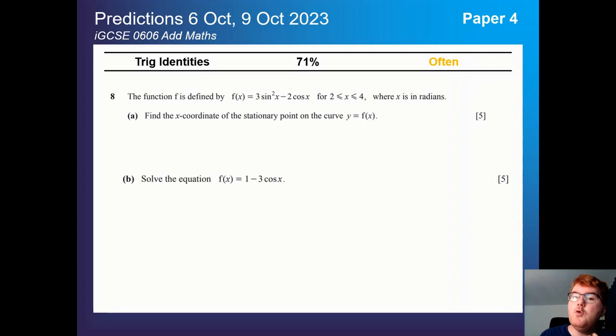Trig identities is also important in paper two, just like in paper one. Notice it can be combined here. They've got you to do a little bit of differentiation to work out a stationary point, and then you're going to use your knowledge of trig equations and trig identities to then solve the equation afterwards.